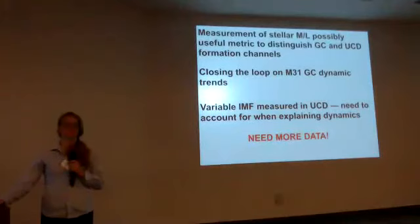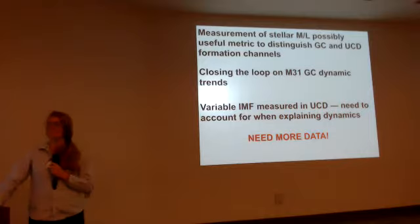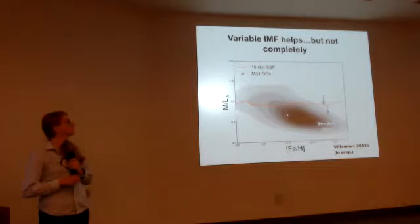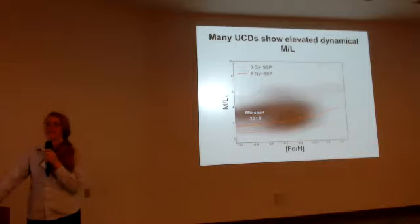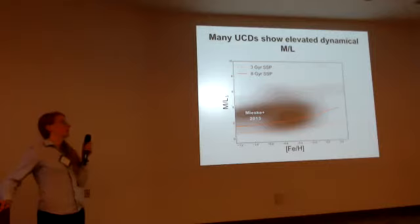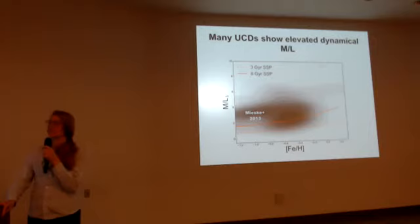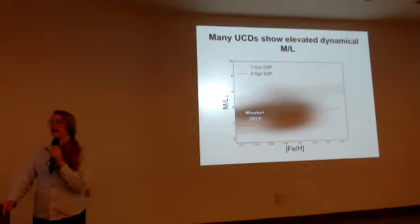Audience question: You're fitting simple stellar populations, but globular clusters are not simple stellar populations — have you tried accounting for that? Speaker response: That's certainly a possibility that could have some effect, but I think the main driver of these trends is the IMF. There is the possibility of abundance effects changing it, and I'll point out that my stellar population models do fit for abundance patterns as well, so that's included in my stellar mass-to-light ratio measurements.